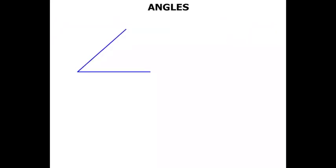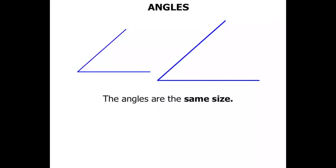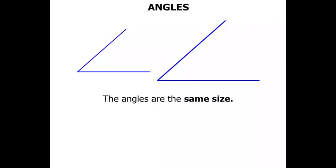Now if we consider this angle here and I'll reproduce it. But I seem to enlarge the angle. In fact the angles are the same size. Because the amount of turn between the arms is the same in each. So the arms got bigger but the amount of turn is the same in each. So that's the angle.